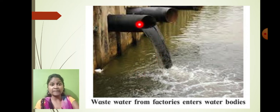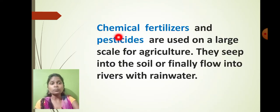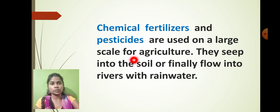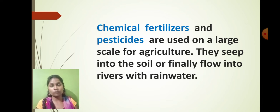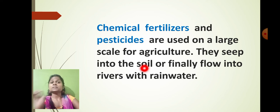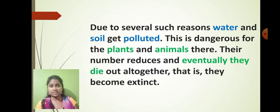The wastewater produced from factories is released into rivers, seas, and oceans, making the water contaminated. Chemical fertilizers and pesticides are used on a large scale in agriculture — fertilizers to increase the fertility of the soil, and pesticides to keep insects and pests away from crops. These pesticides and chemicals seep into the soil or flow into rivers with rainwater, causing soil pollution or water pollution respectively, and harming the entire ecosystem.